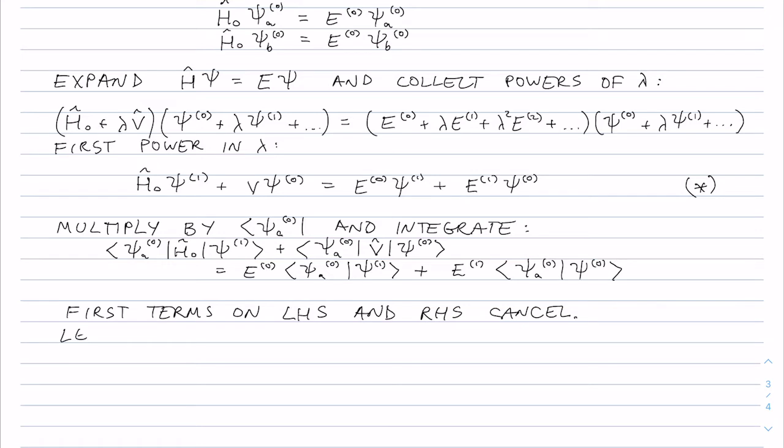And then because this is a two-level system we can write psi 0 as a linear combination of psi a naught and psi b naught, which will give, if I substitute it into the left hand side, I'll have alpha psi a naught V psi a naught which is V_aa plus beta V_ab.